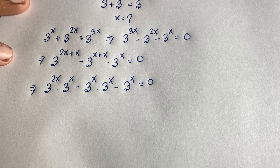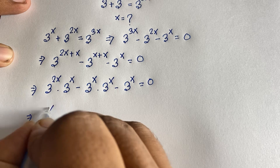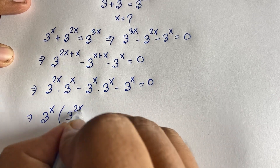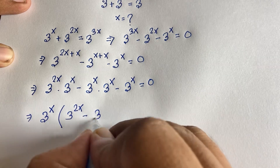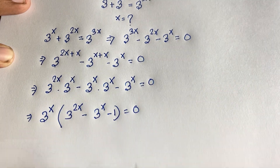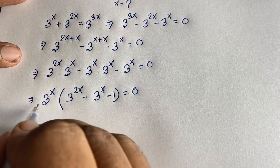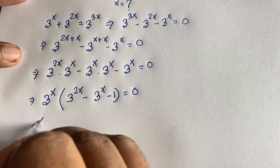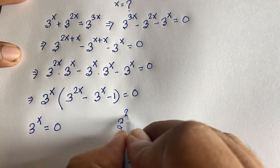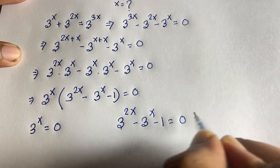Now we factor out 3 to the power x as the common factor, giving us: 3 to the power x times (3 to the power 2x minus 3 to the power x minus 1) equals 0. This gives us two cases: Case 1: 3 to the power x equals 0, and Case 2: 3 to the power 2x minus 3 to the power x minus 1 equals 0.